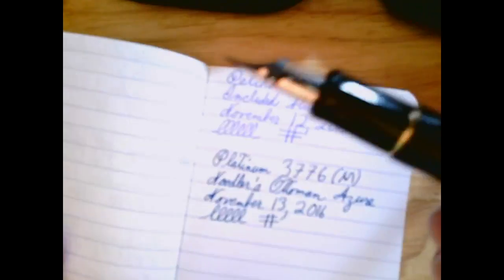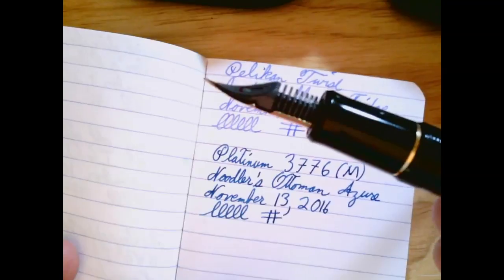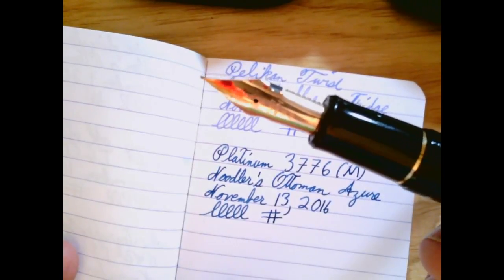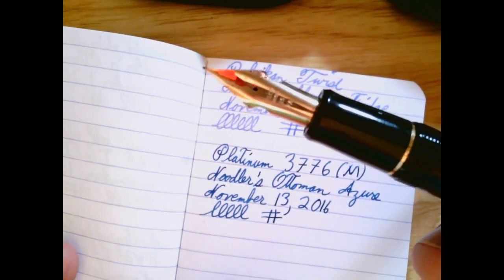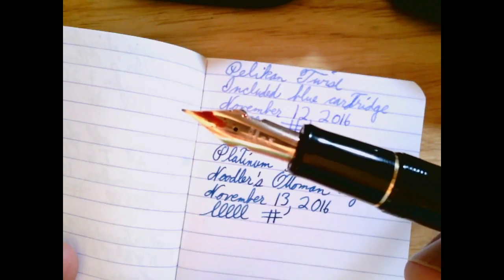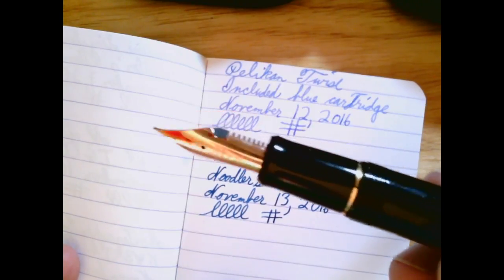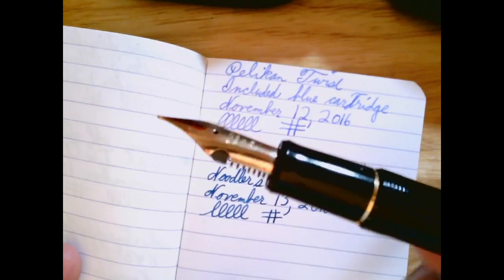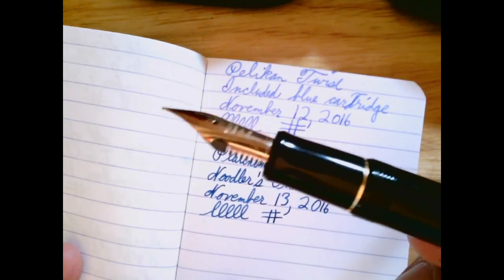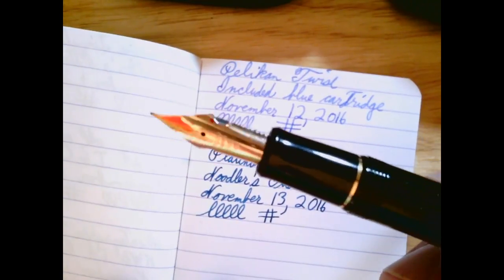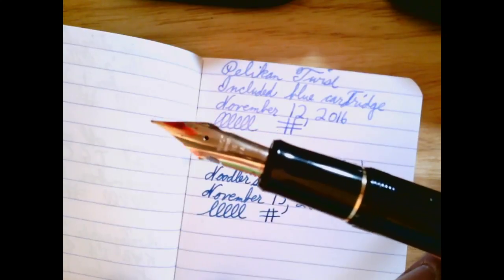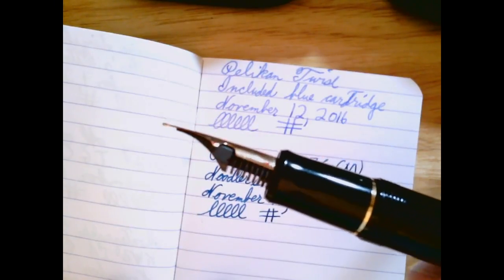This has been inked for a while. I inked it before the rodeo, but this is a Pilot Custom 743. It has a Falcon nib in it. There were some questions both on my channel and on Fountain Pen Geeks or Fountain Pen Network, one of the two forums, about the Falcon nibs versus the Falcon pen.